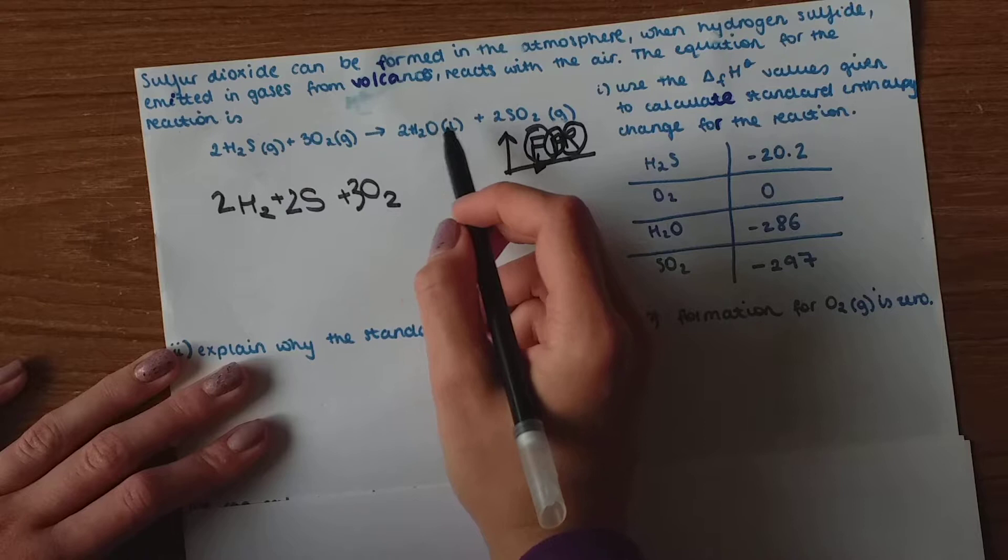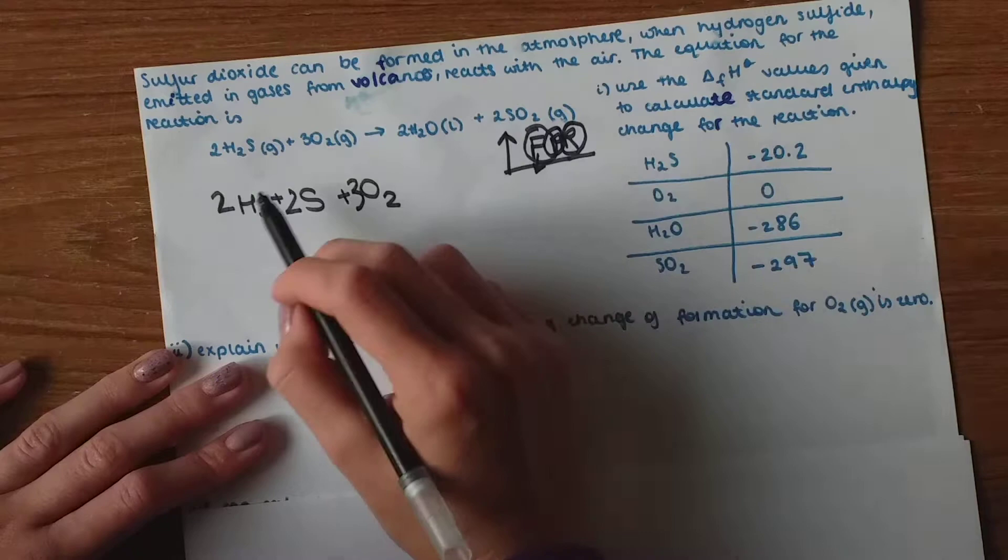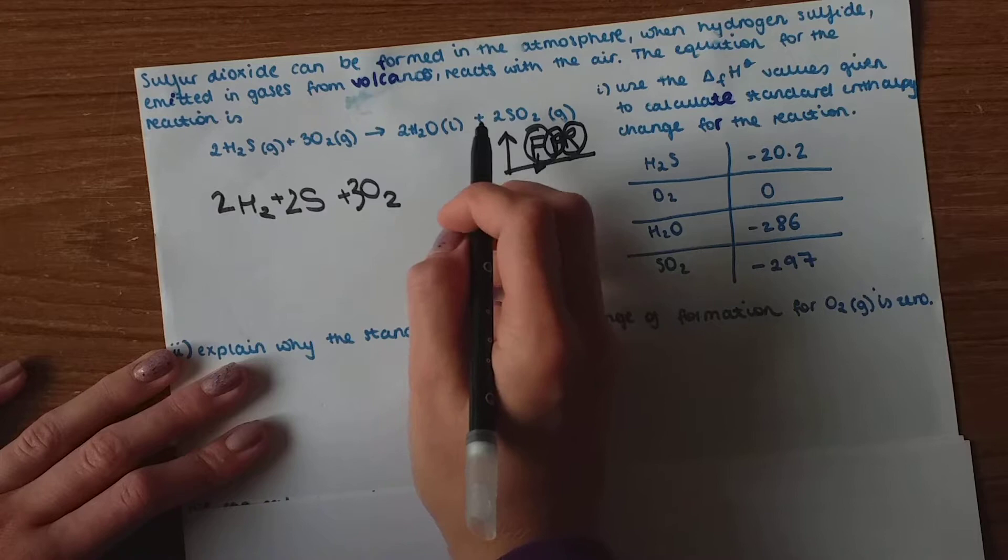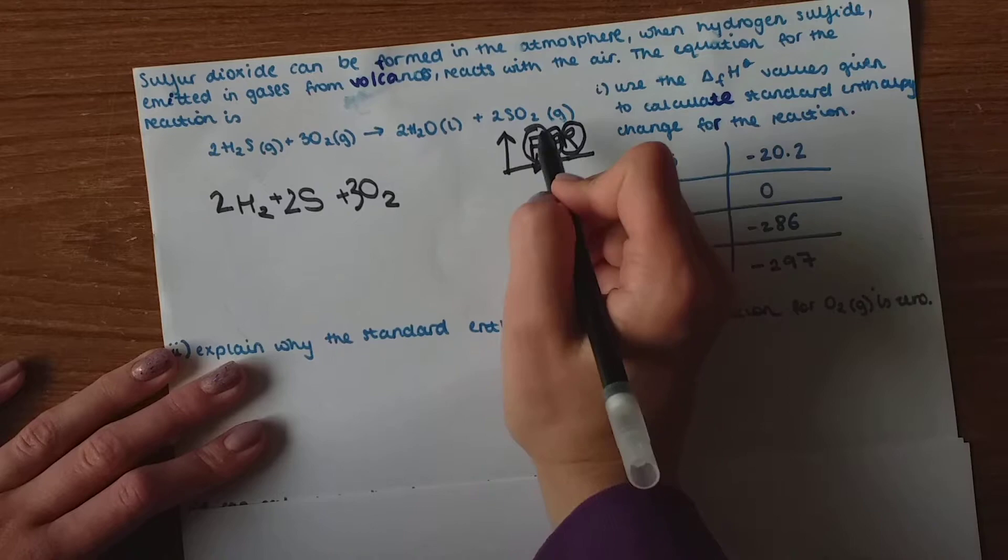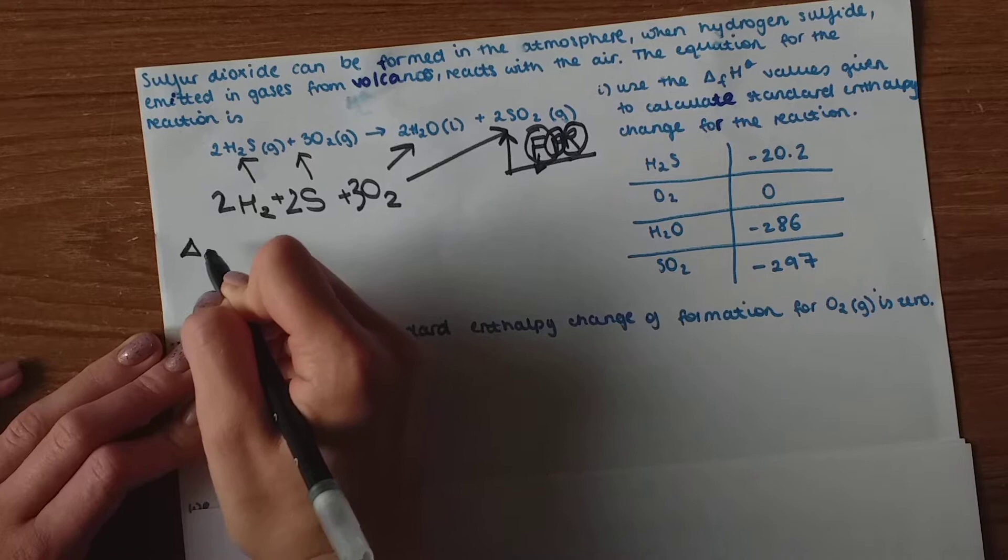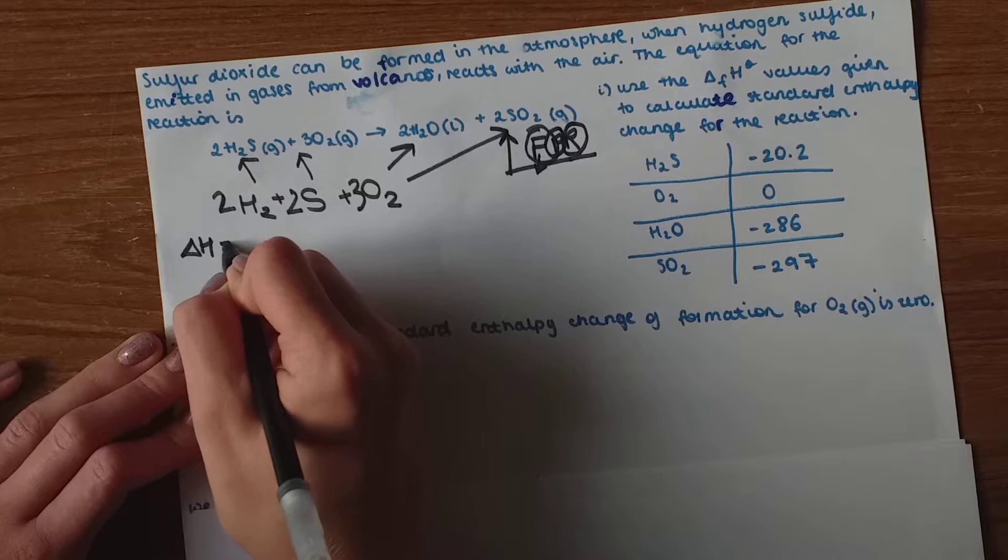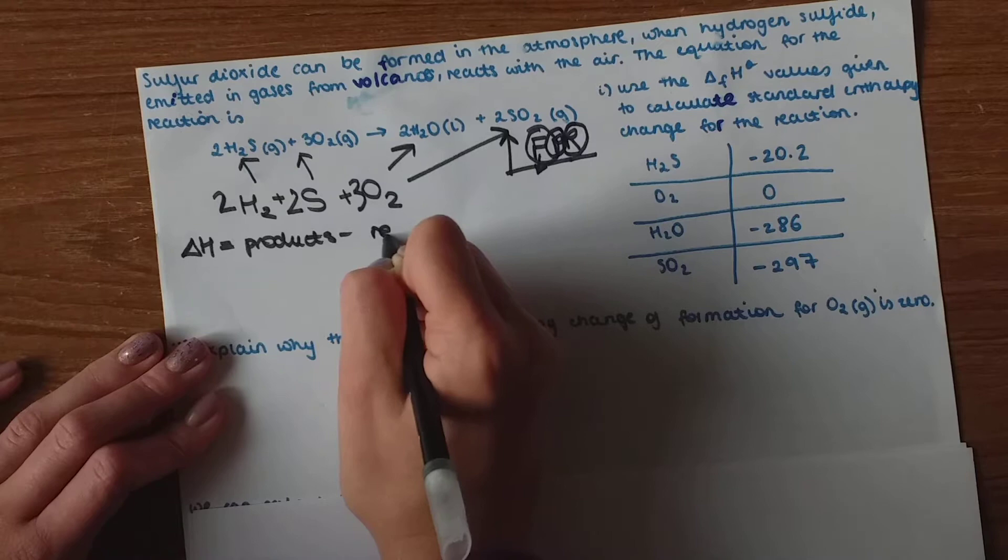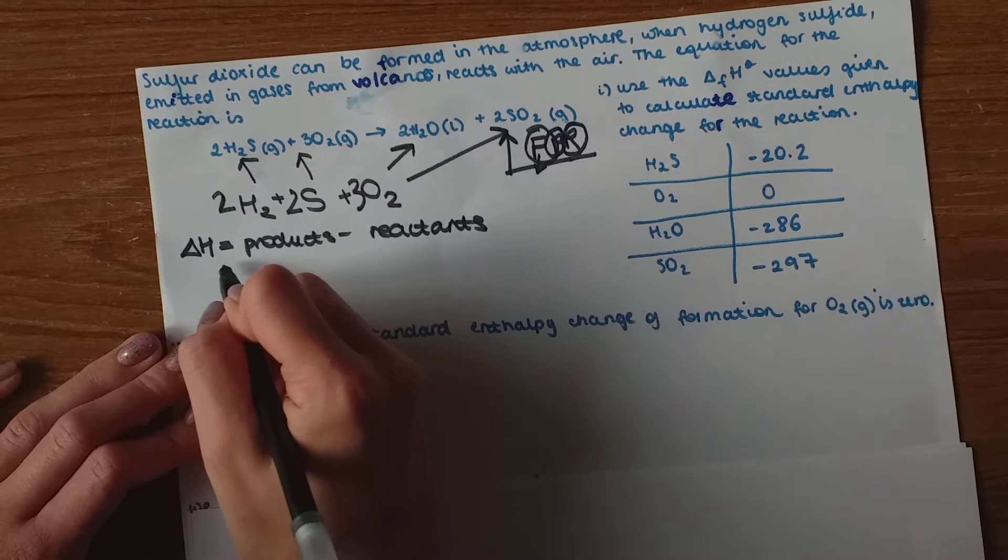This is also the case for this side. We've got four hydrogens, two sulfurs, two plus four which is six oxygens. And what I mean by the arrow going up, all of this forms these substances. So now we've got to find the standard enthalpy change for the reaction which is products minus reactants.